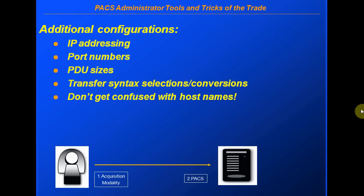There are additional parameters you also need to set up: first, the IP addresses; second, the port numbers. Port numbers are very important — they must be unique. The commonly used port number is 104. However, it is strongly recommended to use the official DICOM port number 11112, assigned by IANA specifically for DICOM communication.